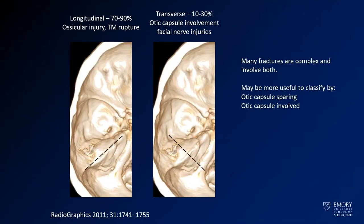Here you see a classification for how temporal bone fractures can be classified. You have longitudinal fractures which run along the long axis of the temporal bone, and then transverse fractures which go the other way. They have a slightly different association with which injuries can be seen. However, it's not particularly important to focus on those given that a lot of them can be complex and have components of both.